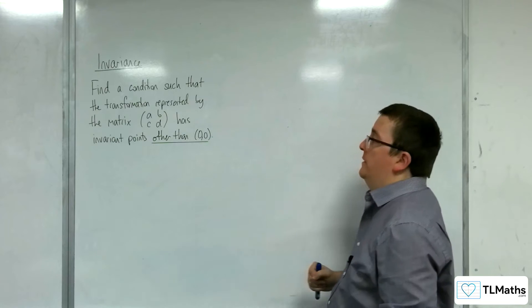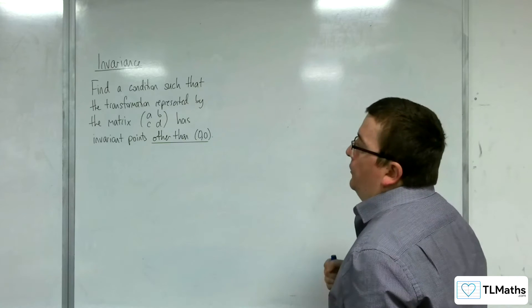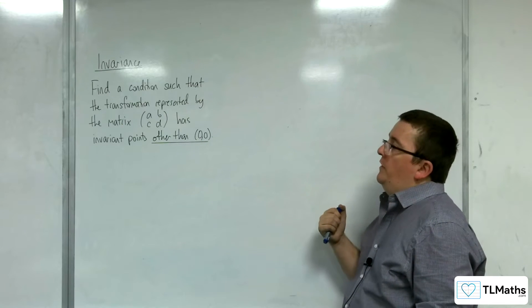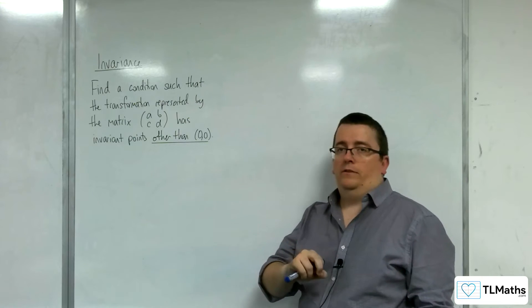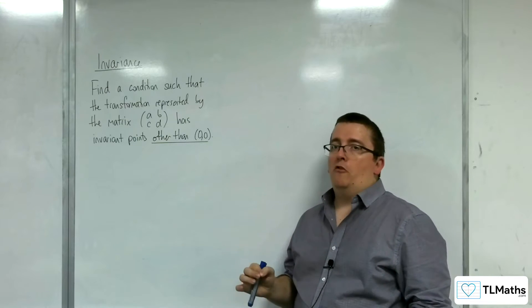We've got a little bit of a problem here. Find a condition such that the transformation represented by the matrix (a b; c d) has invariant points other than (0,0), other than the origin.